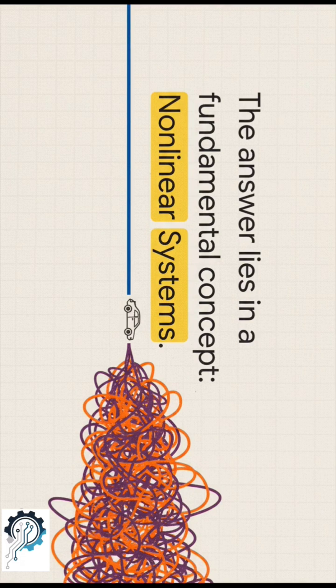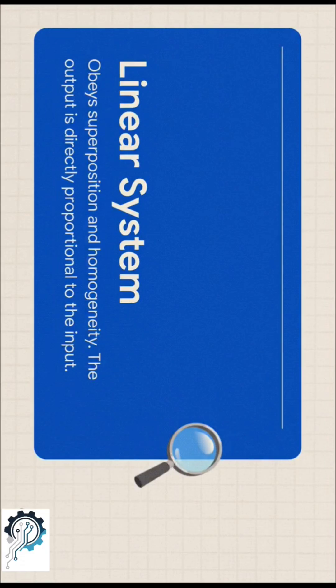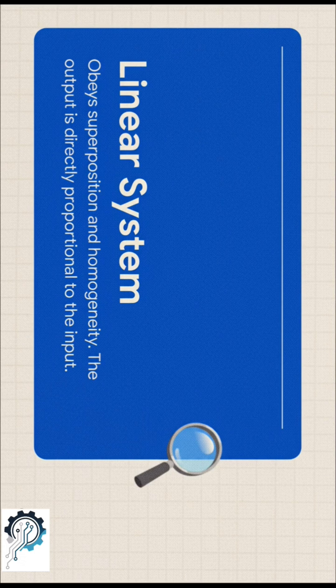Well, the answer is that cars, like most things in the real world, are non-linear systems. So a linear system is simple. You put two in, you get two out. It's totally predictable.